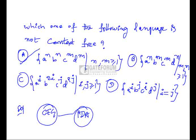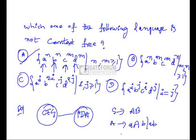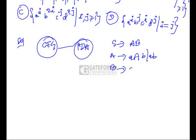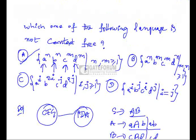For option A, a's and b's must be equal and c's and d's must be equal. We can push a's onto the stack and pop them using b's, then push c's and pop them using d's, getting an empty stack. Alternatively, a grammar S → AB where A generates a^n b^n and B generates c^m d^m works. So option A is a context-free language recognizable by PDA.